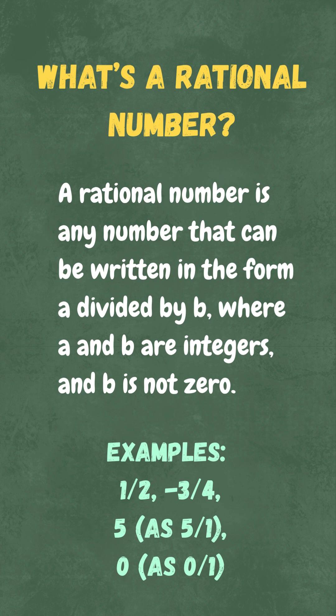Examples? 1 half, minus 3 fourths, 5, which is 5 over 1, and even 0 as 0 over 1. All of these are rational numbers.